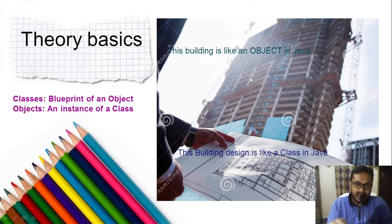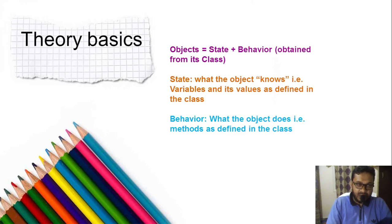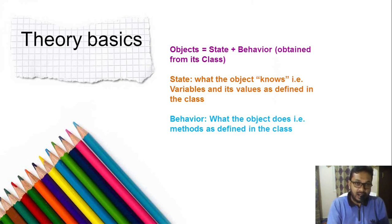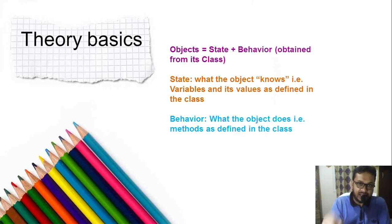Objects are real — they actually occupy memory and are required when we execute a Java program. The entire Java program is based on the concepts of classes and objects. An object is an instance which is created from the class based on the features of the class. Each and every object in Java generally has two things: one is the state and another is the behavior. Both state and behavior are obtained from the class based on which the objects are going to be created.